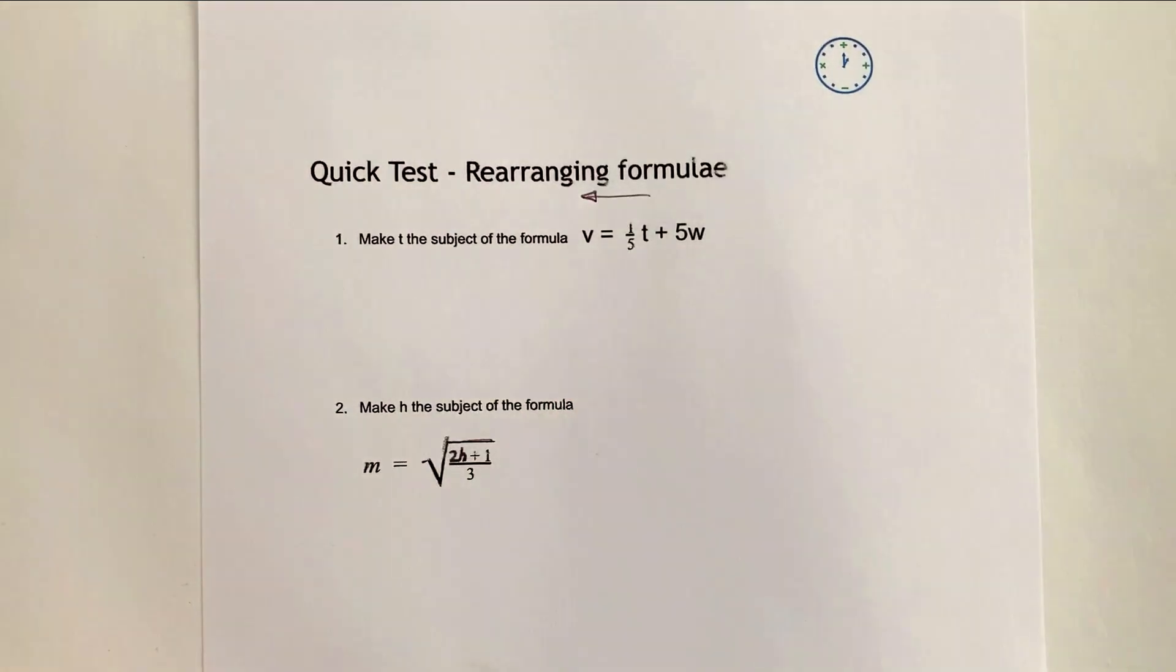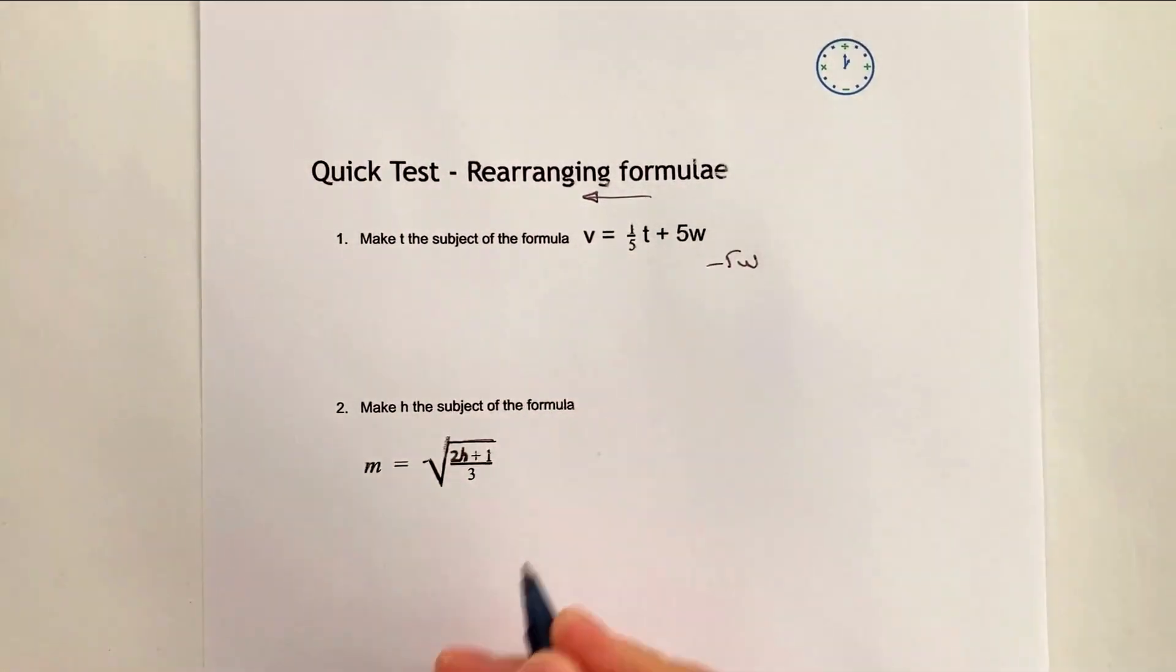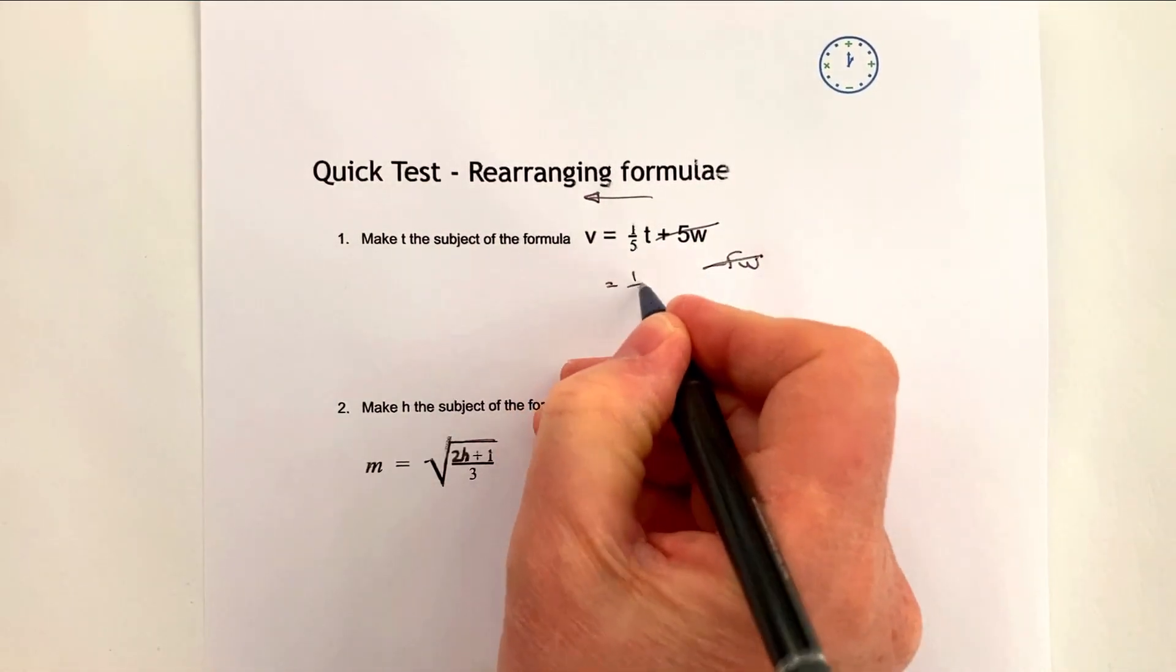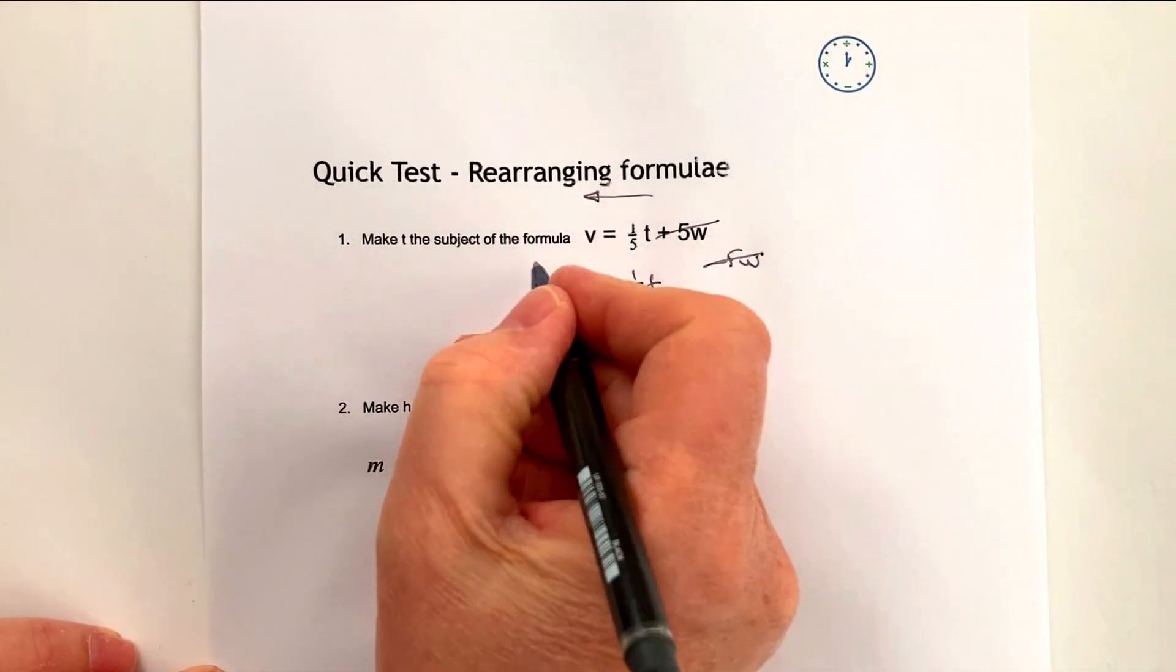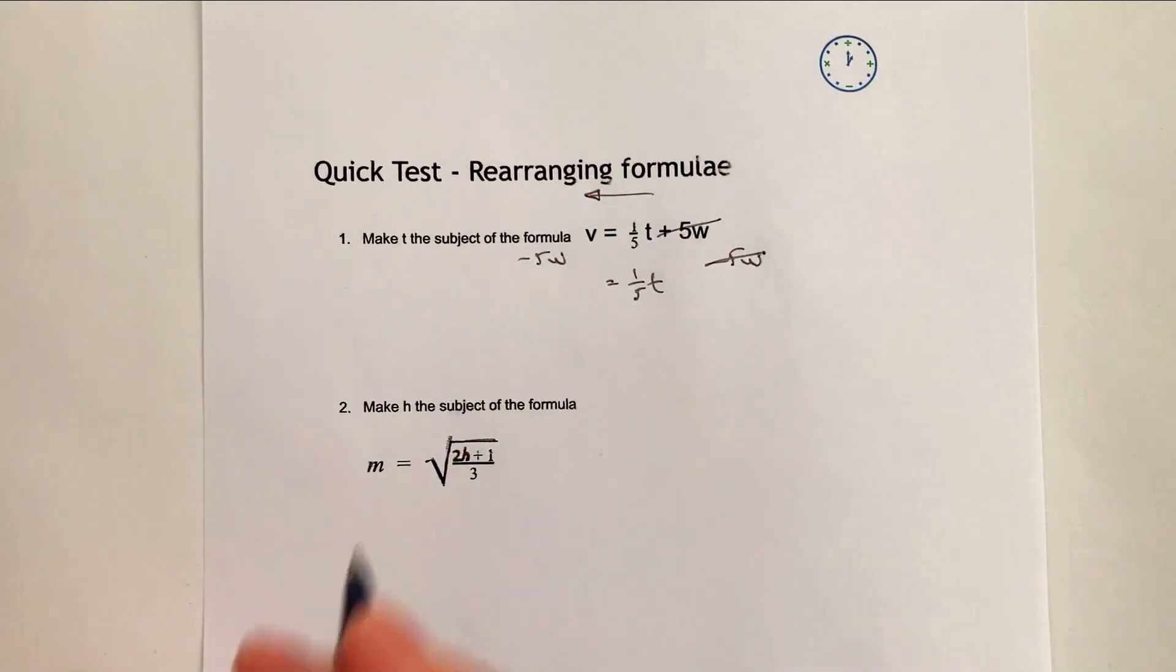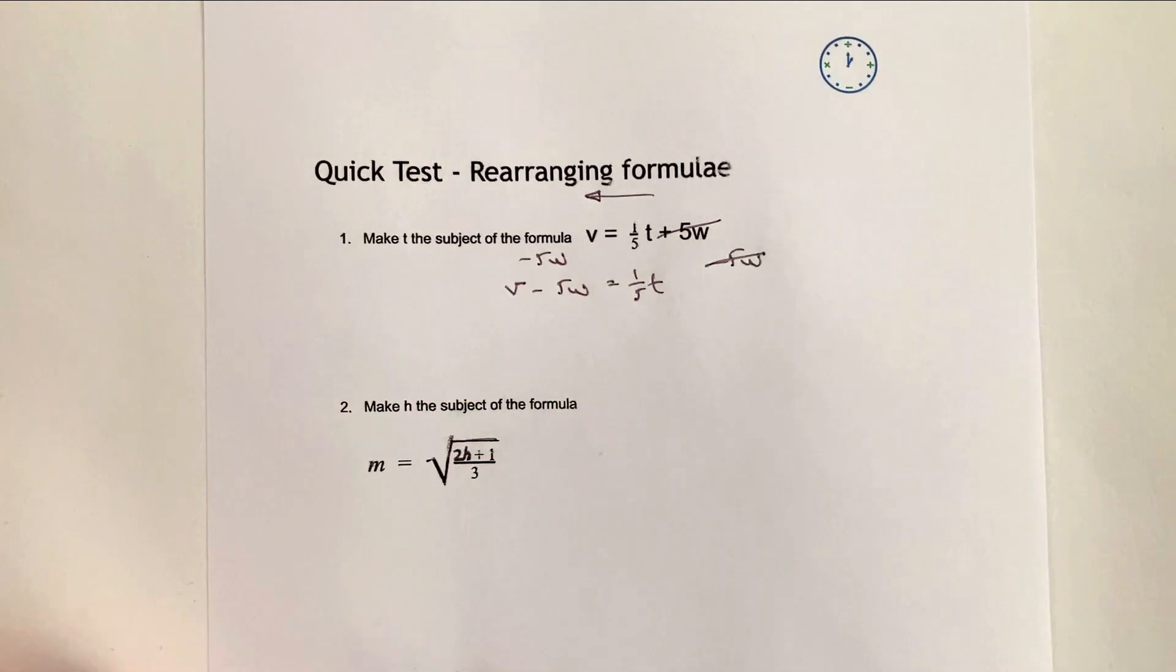So I've got this plus five w. I'm going to get rid of it by minusing five w. Now if I do that I lose that which is great and on the right hand side I get one fifth of t which is brilliant. However the problem I've got is that I have to balance the equation so I need to minus five w on the left hand side as well. So on the left hand side I'm going to end up with v minus five w. Now that equals a fifth of t.